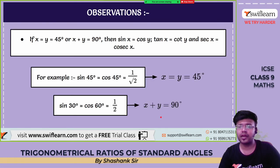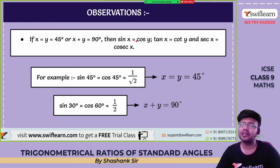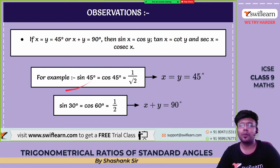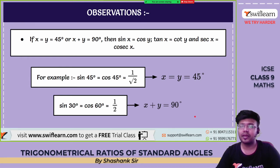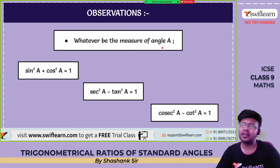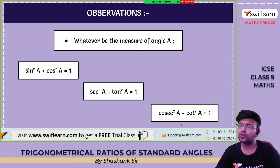Observation: if x + y = 90°, then sin x = cos y, tan x = cot y, and sec x = cosec y. For example, sin 45° = cos 45°, and sin 30° = cos 60° = 1/2. Also, whatever the measure of angle A, three identities always hold: sin²A + cos²A = 1, sec²A − tan²A = 1, and cosec²A − cot²A = 1.